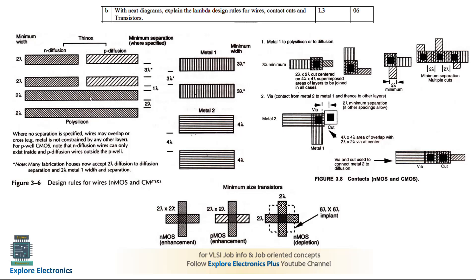For metals there are two types: Metal 1 — represented with a straight line — has minimum width of 3 lambda and spacing between two Metal 1 layers is 3 lambda. Metal 2 has width of 4 lambda and spacing of 4 lambda. This covers the wire rules: diffusion, polysilicon, and metals.